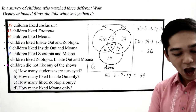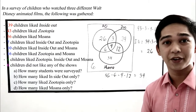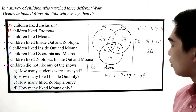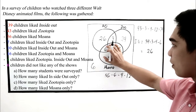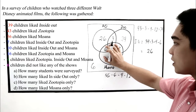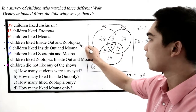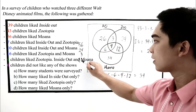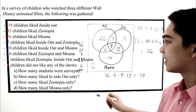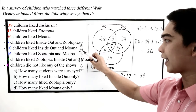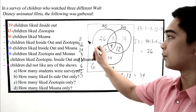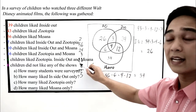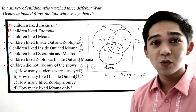First question: how many students were surveyed? We add all numbers in the Venn Diagram. Moana total is 56, plus Zootopia only 24, plus Inside Out and Zootopia only 3, plus Inside Out only 26, plus the outside 6, plus intersections 12, 10, 4. Adding everything: 56 plus 24 plus 3 plus 26 plus 6 plus other intersections gives us 115. So all in all, 115 students were surveyed.